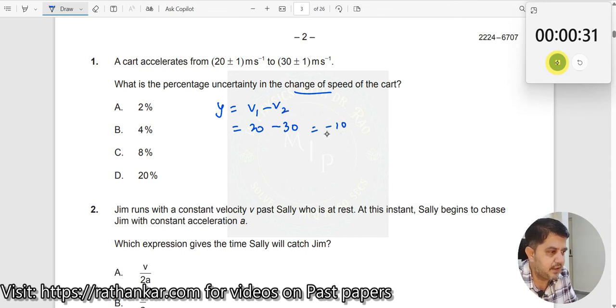If I take V1 minus V2, if I take V2 minus V1, it will be plus 10. Anyway, now, in a similar way, what is delta V? Delta Y will now be equal to delta V1 plus delta V2, right. So, which will now be equal to 1 plus 1, which is 2 over here. Okay.